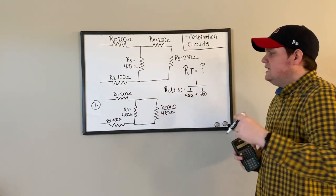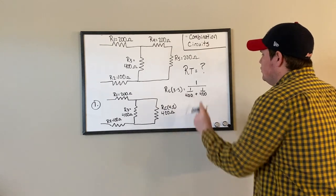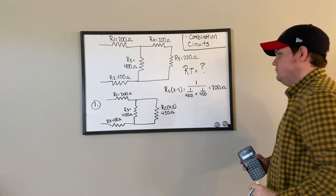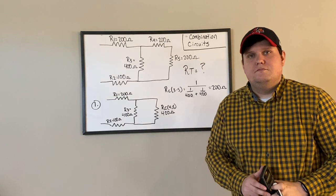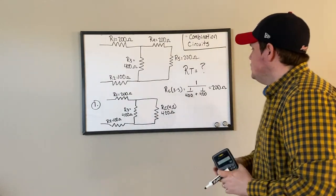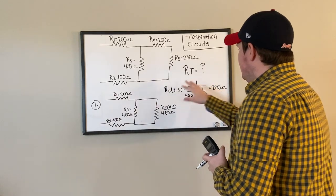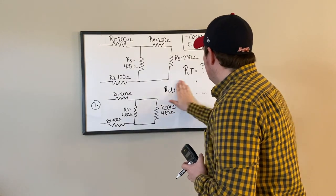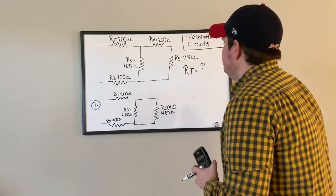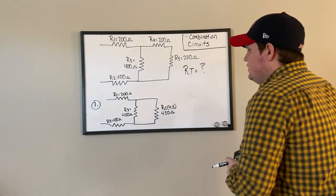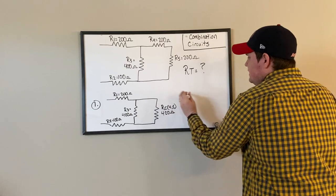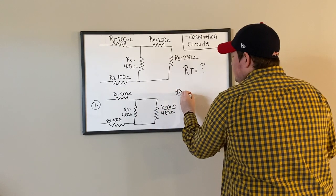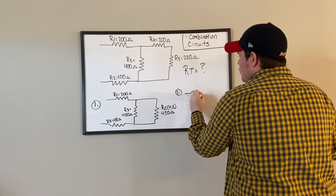of 200 ohms. For space purposes I'm going to erase this and create another redraw. Redraw number two is going to be R1, my new combination resistor RC3 through 5, and R2.